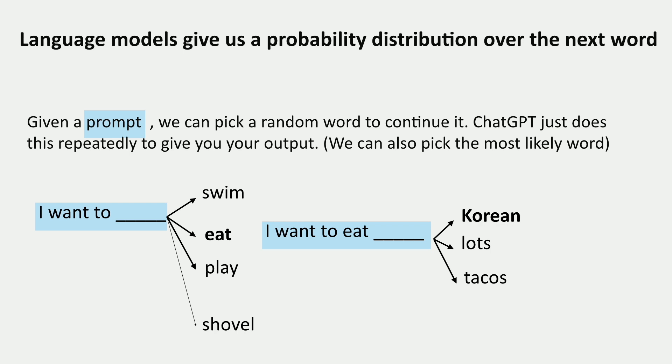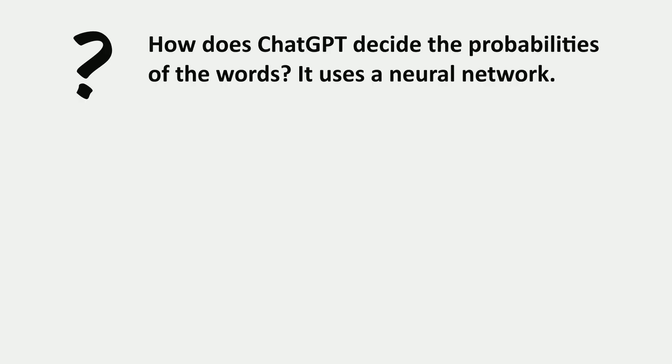This shows you how ChatGPT generates an output. But what we haven't determined is how ChatGPT actually decides the probabilities of the words. This process uses what's called a neural network.